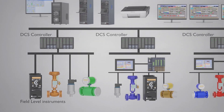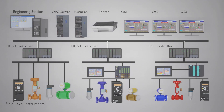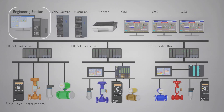These controllers are connected to one network that has different systems on it. One of them is the engineering workstation. If you want to create graphics on operator screens, or write code on individual controllers in different areas, you can use the engineering workstation to modify programs on any specific DCS controller — without going to the site to plug in a laptop. You can sit in the control room and use the engineering workstation to modify code on all DCS systems.